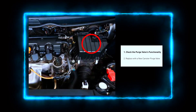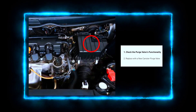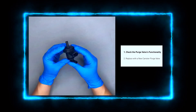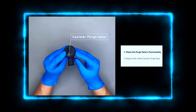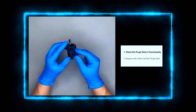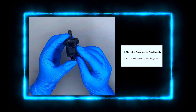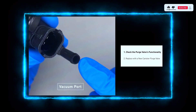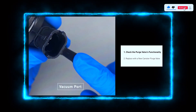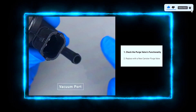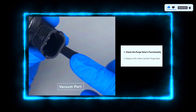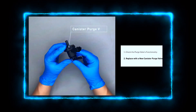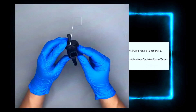Step 2: Inspect the EVAP purge control valve. The location can vary by car model, so consult your repair manual or do a quick web search to find it. With the engine running, carefully place your finger over the vacuum hose connected to the valve — you should feel a slight suction. If not, the valve might be stuck and need replacing.